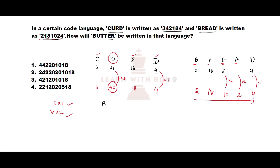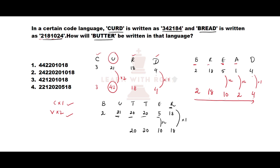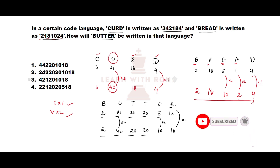Now for 'butter': B=2, U=21, T=20, T=20, E=5, R=18. Applying the pattern: R is a consonant ×1 = 18, E is a vowel ×2 = 10, T consonant = 20, T consonant = 20, U vowel ×2 = 42, B consonant = 2. So the number cluster is 2, 42, 20, 20, 10, 18, which is option number 2.